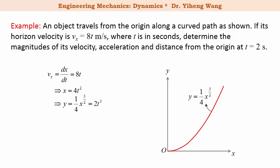Since y is related to x through y equals to one quarter times x to the three halves power, therefore y the vertical position as a function of time is two t to the third power. Therefore the position vector is xi plus yj which is four t squared i plus two t to the third power j.